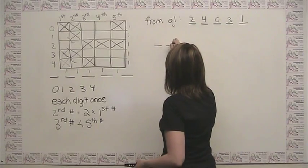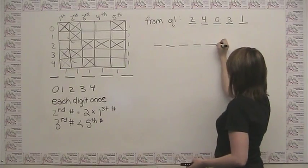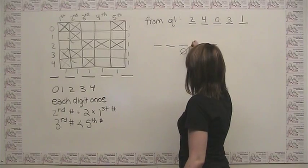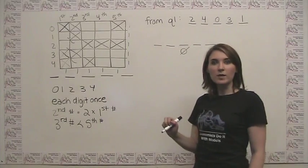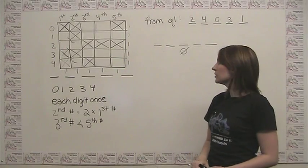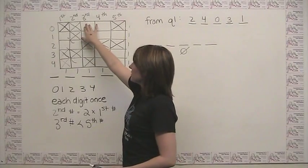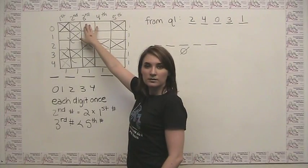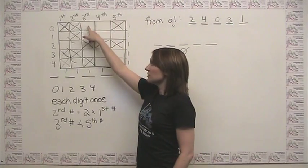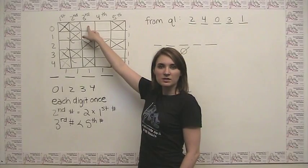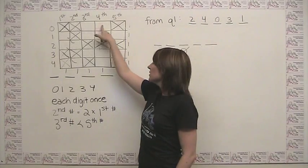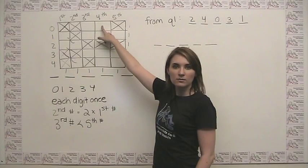So we can say, if these are our five spots, and we're told that the third digit is not zero, just put not zero here to remind us. If we're crossing out zero as an option for the third spot, we notice from before that zero is already pretty restricted, and that there are only two options for where it could go. Well if we just cross out the third spot for zero, we know that the zero in fact has to go fourth.